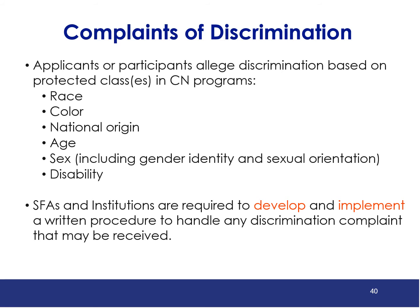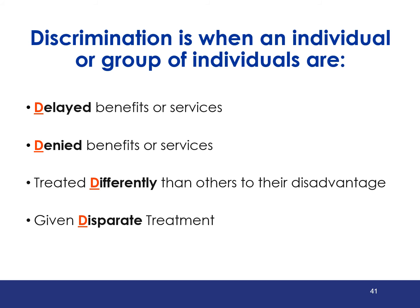All SFAs and institutions must develop a written civil rights complaint procedure and implement this procedure. A person can allege that discrimination has occurred and file a complaint if they feel that they were denied benefits, they received delayed benefits, they were treated differently than others, or were provided disparate treatment based on membership in one or more of the protected classes.